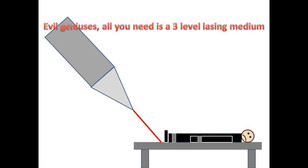So now all you evil geniuses out there know that to kill James Bond, all you need is a three level lasing medium to create your laser. Just make sure he doesn't escape this time. Thank you very much for listening.